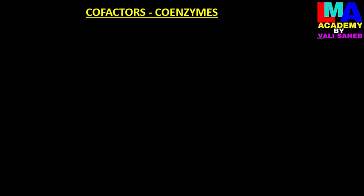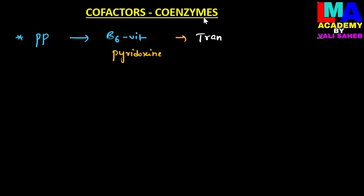Pyridoxal phosphate (PLP) is a coenzyme derived from vitamin B-6, whose chemical name is pyridoxine. Its function is the transfer of an amine group from one substrate molecule to another substrate molecule, which means it is mainly involved in the transamination process.